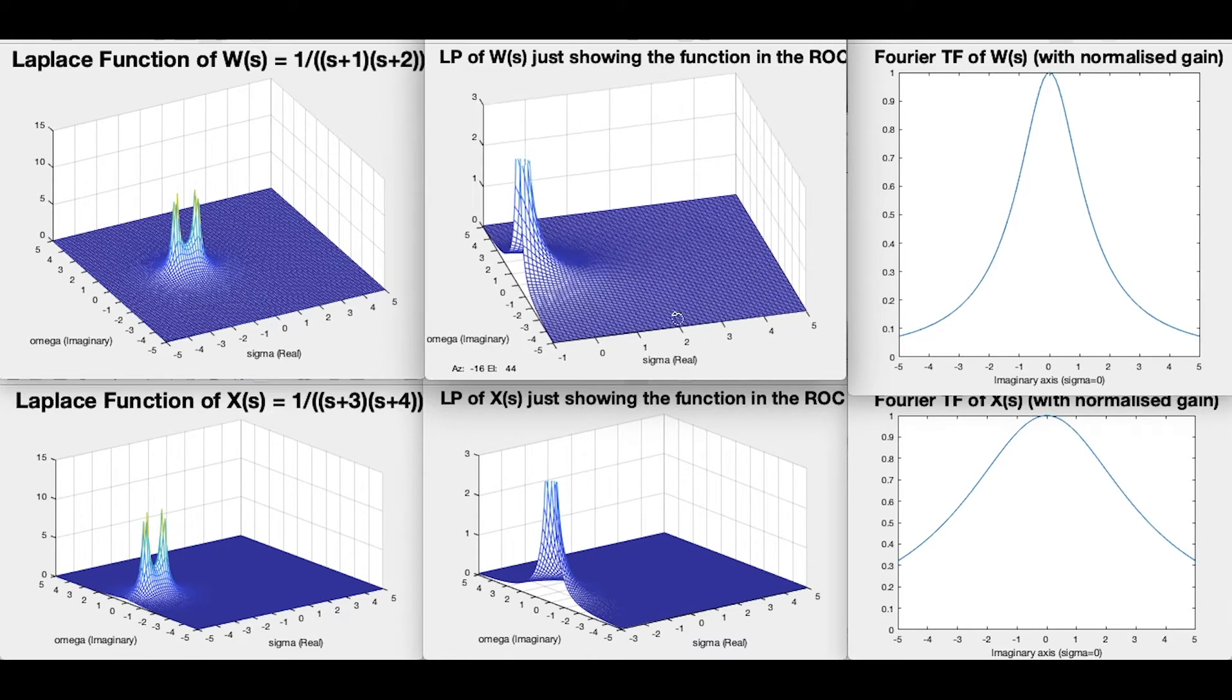Don't forget, the Laplace transform is a generalization of the Fourier transform. And the Fourier transform exists in the Laplace transform along the line where sigma equals zero.